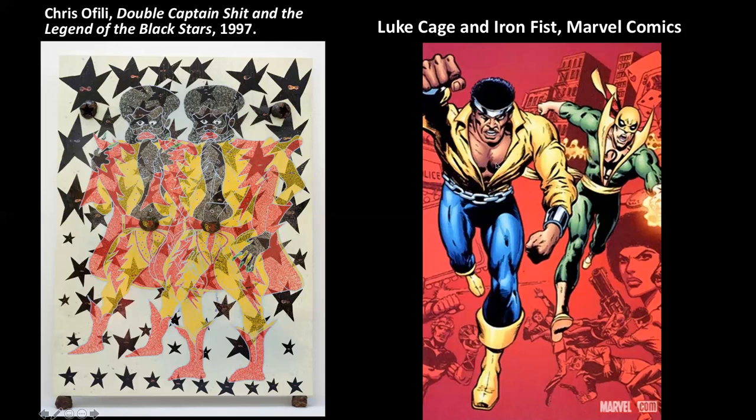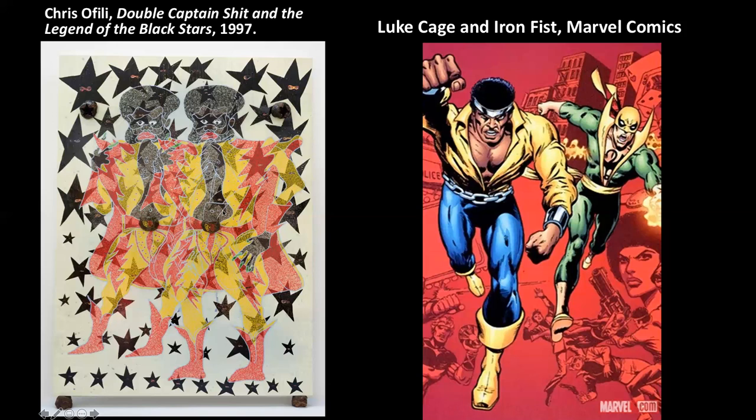Luke Cage is wearing this very 1970s outfit with the tights and boots. We see that mirrored in 'Double Captain Shit,' who is also kind of like an Elvis-type figure — he no longer has Luke Cage's body, he's still wearing the jumpsuit but things are kind of falling out a little bit, and everyone's observing him.